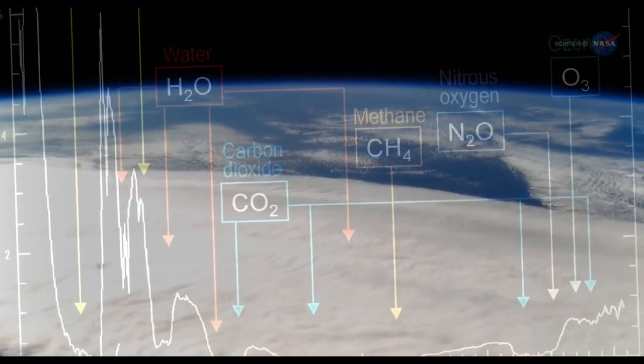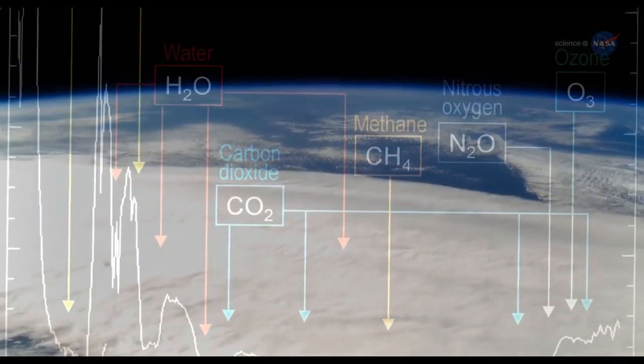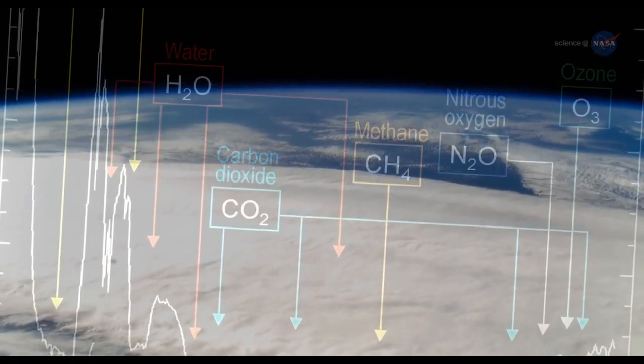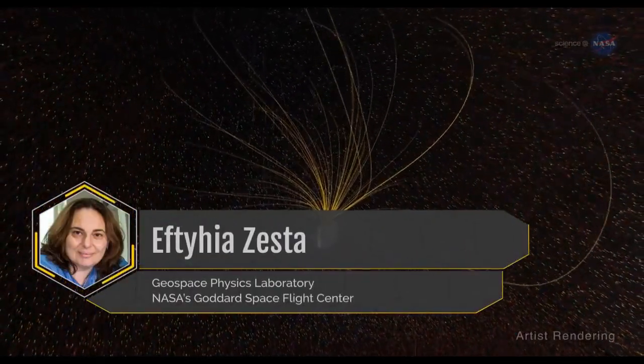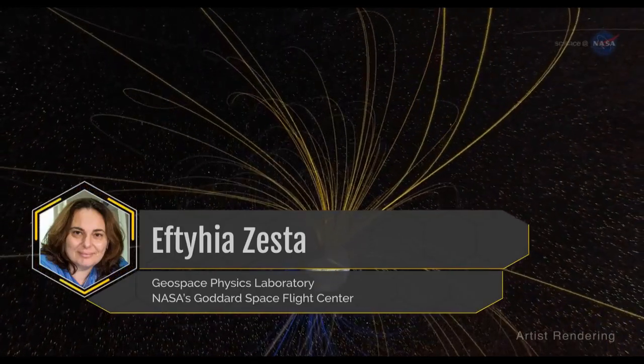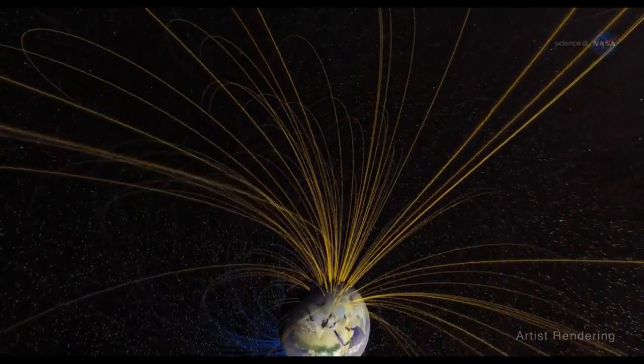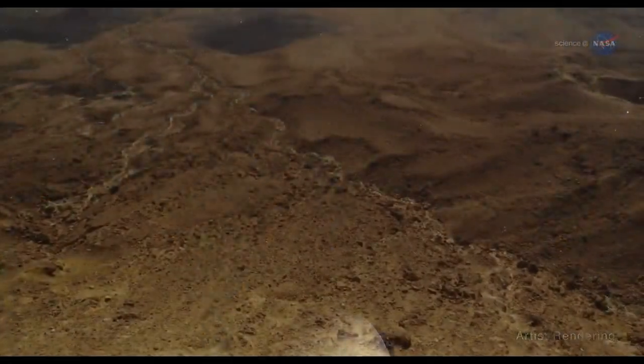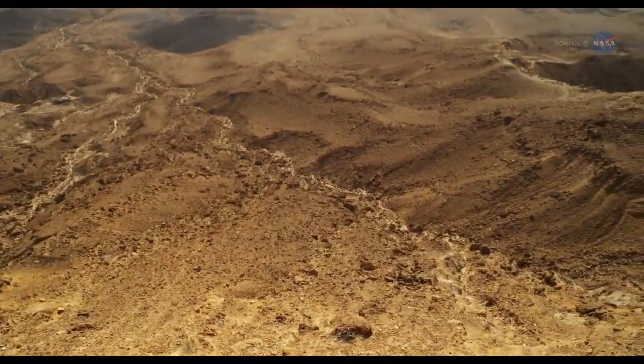By contrast, Earth's magnetosphere seems to have kept our atmosphere protected. Eftehia Zesta of the Geospace Physics Laboratory at NASA's Goddard Space Flight Center notes, if there were no magnetic field, we might have a very different atmosphere left, without life as we know it.